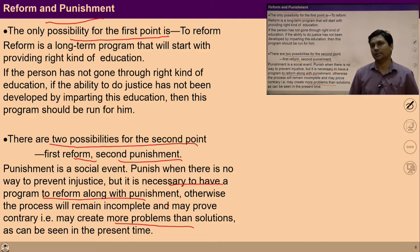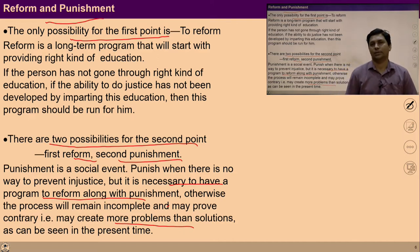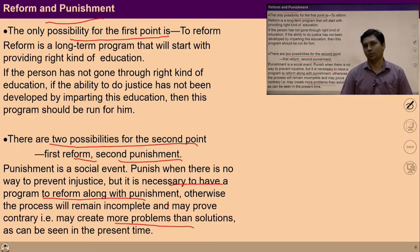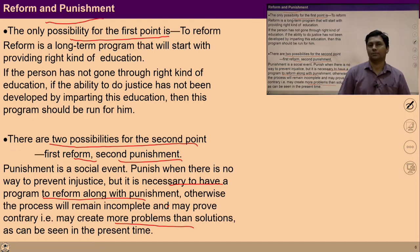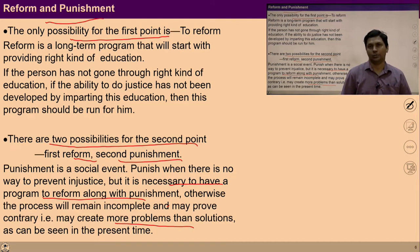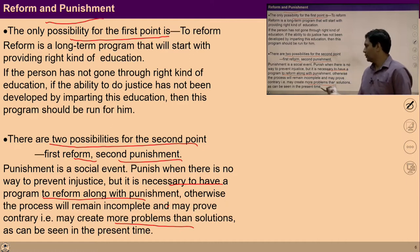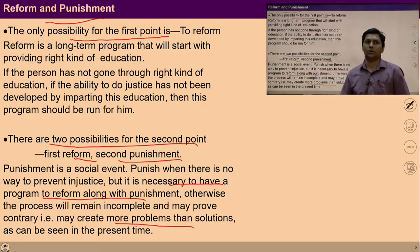Consider a simple example: suppose your child makes a mistake. Two things would be required — one is to stop the child immediately, and second is to work on the right understanding of the child so that in future the child may understand right from wrong. So both are required. Reform along with punishment is required, but the process of reform is a must.